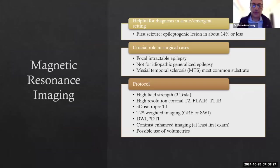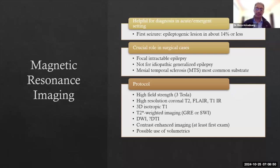Remember there is a difference between seizure and epilepsy. A seizure is just one event, and epilepsy is when you have recurrent seizure events. A seizure could be a symptom of any sort of problem affecting the cortex, but epilepsy is reserved for people who are affected with this disease long term. Anyone presenting with a first-time seizure, the chances of finding a lesion are much lower — scans are only positive about 14% of the time. The main role of imaging is in focal intractable epilepsy.